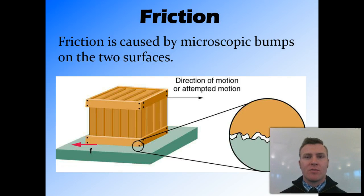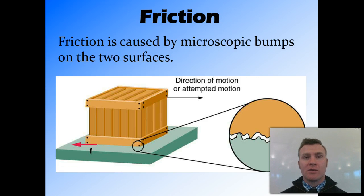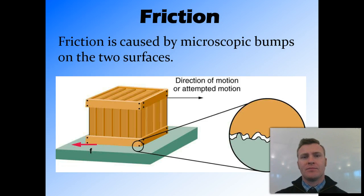The reason we get friction between objects is because of the microscopic bumps on the two surfaces. They look smooth, but on a microscopic level there are tiny bumps, and those bumps grind on each other and cause an object to slow down.